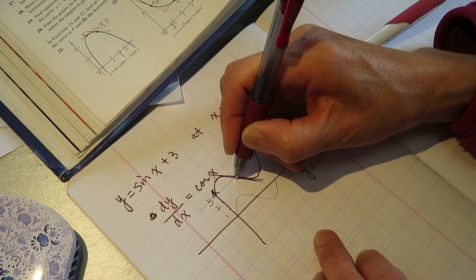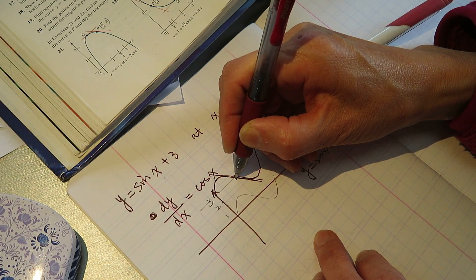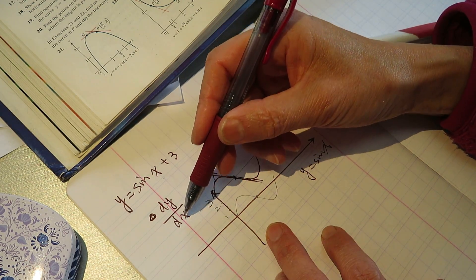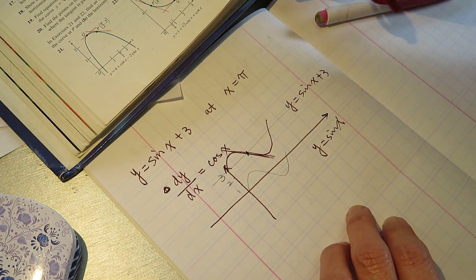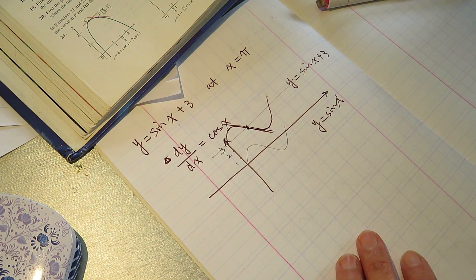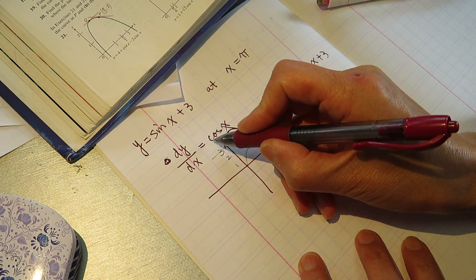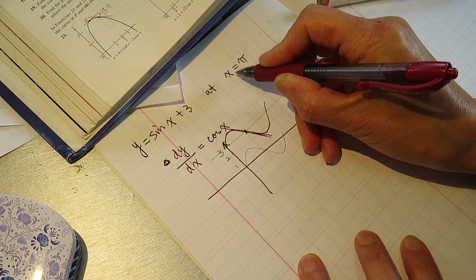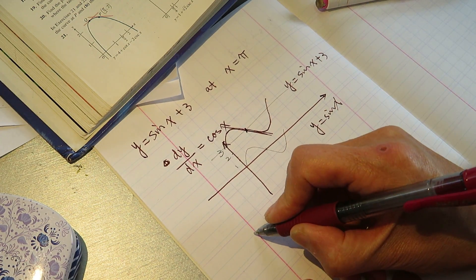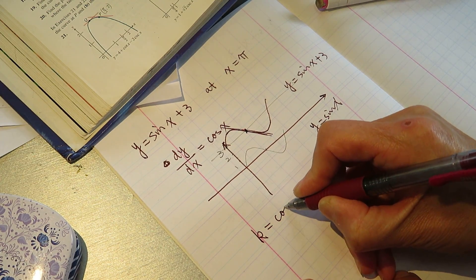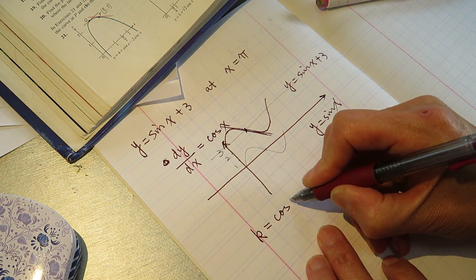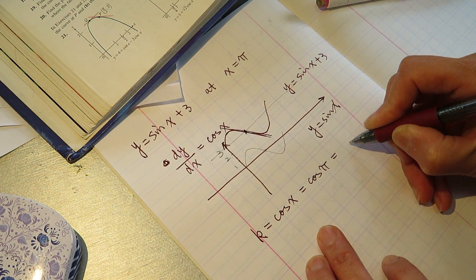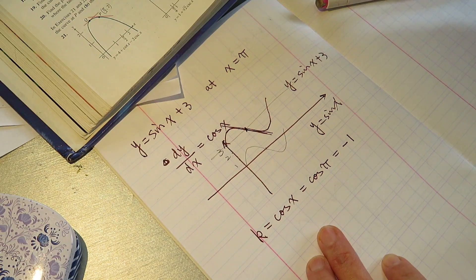So the tangent line at pi is such a line, such a line, and the rate of change, the rate of change is the derivative. So the slope is the derivative, and at this point, cosine x, x equal to pi. So k equal cosine x equal cosine pi equal negative 1. Make sense?